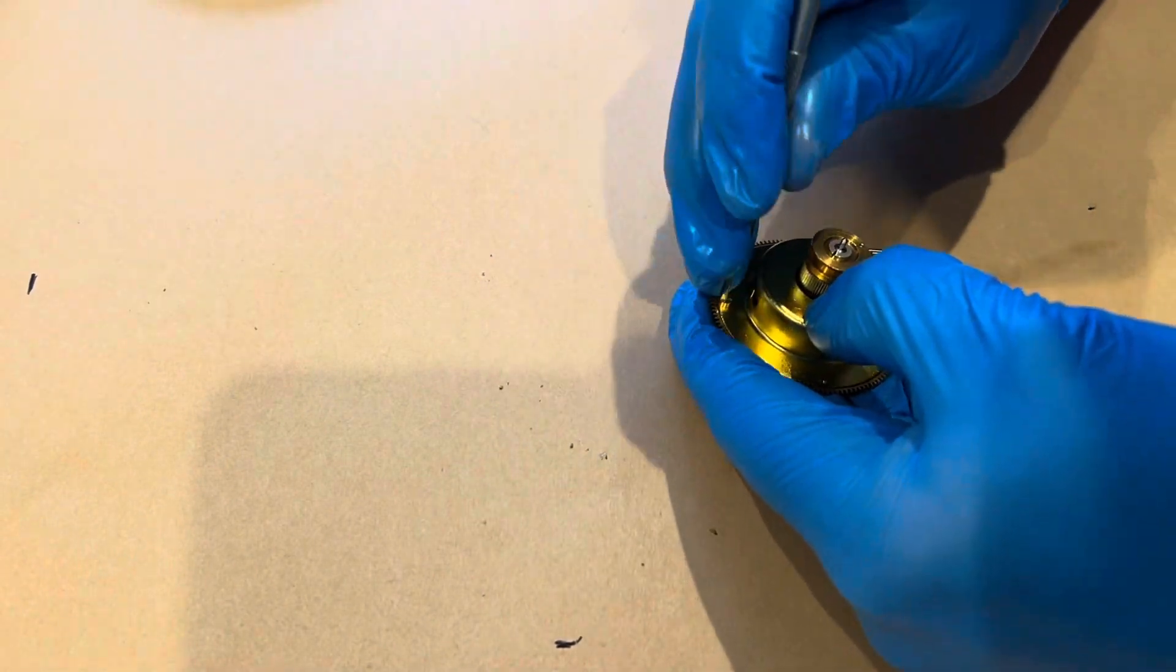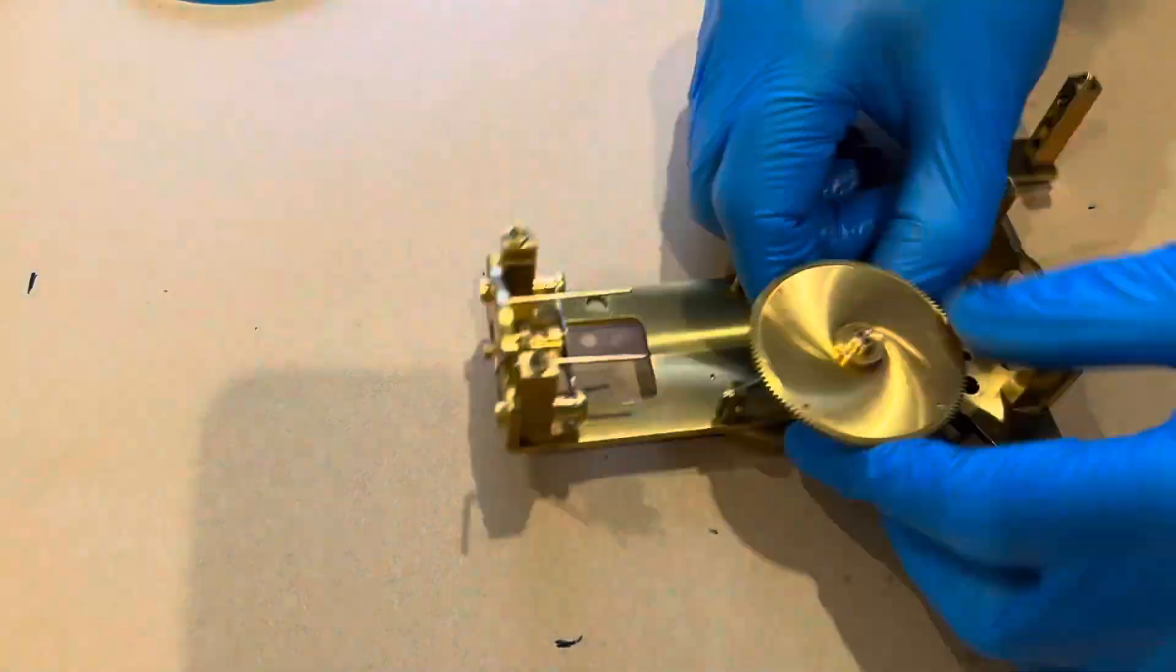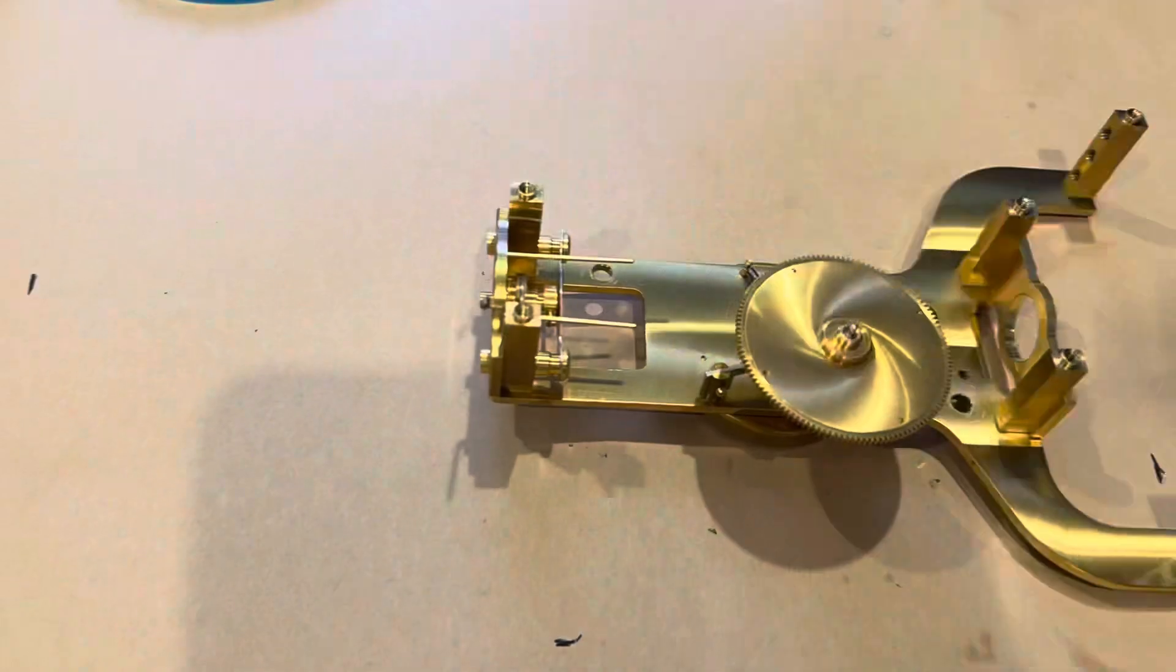Okay, here we have the 65 millimeter spring going in the barrel. We're going to do the same thing. We're going to install it in the frame. Everything's the same. Everything has been lubricated with Mobius 9020.